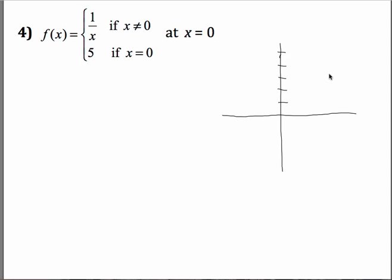The graph of 1 over x simply is that of a rational expression with two branches. One in the first quadrant, one in the third quadrant. And the second piece, when our x is equal to 0, we have the y value of 5. So that simply gives us an isolated point up here on the y-axis at 5.